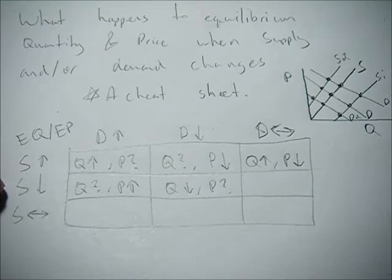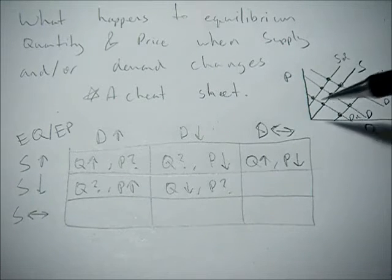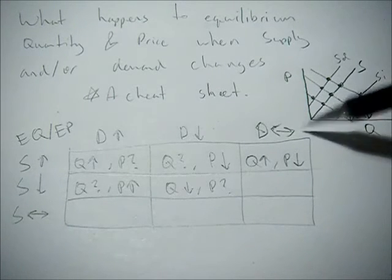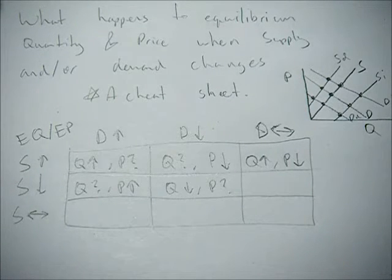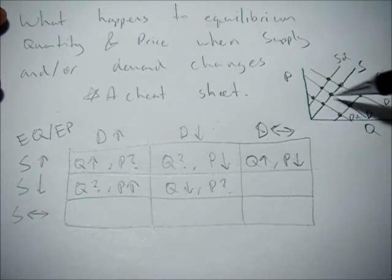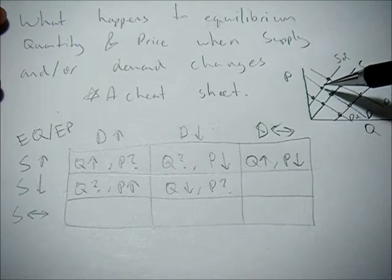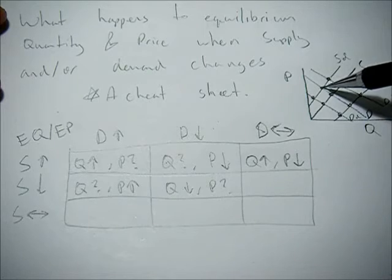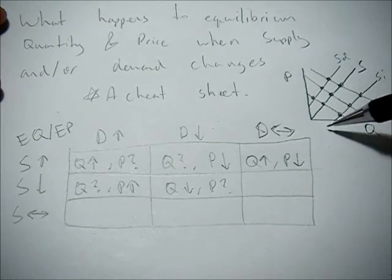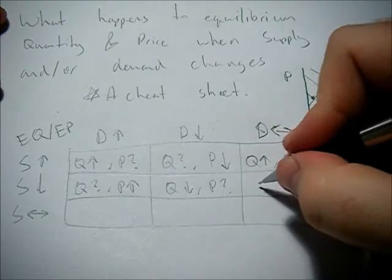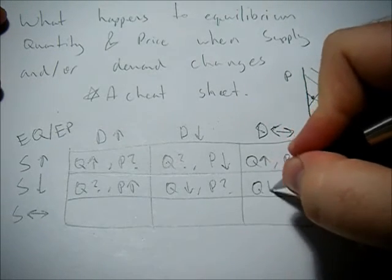Now if supply decreases and demand stays the same, we remain on the original demand curve. As supply decreases, we can see equilibrium price going up and equilibrium quantity going down.